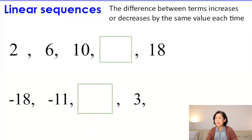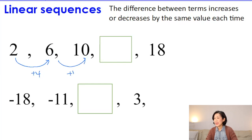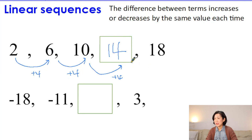When you have a number sequence, always try to figure out the common difference. The difference between 2 and 6 is 4, and between 6 and 10 is also 4. The numbers are increasing by 4. If you add 4 to 10, that gives you 14. Let's double check — add 4 makes 18. So this number sequence increases by 4.